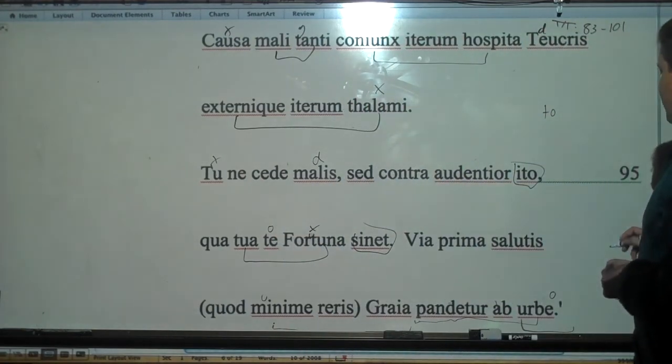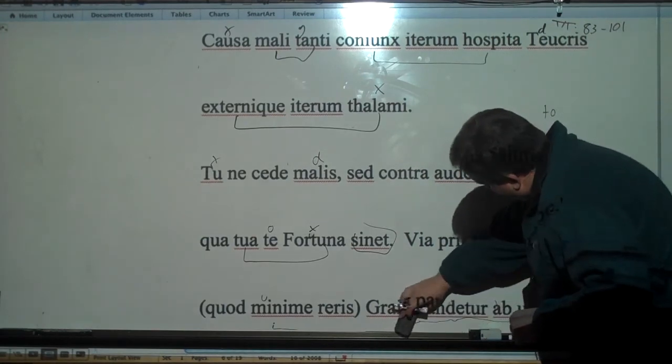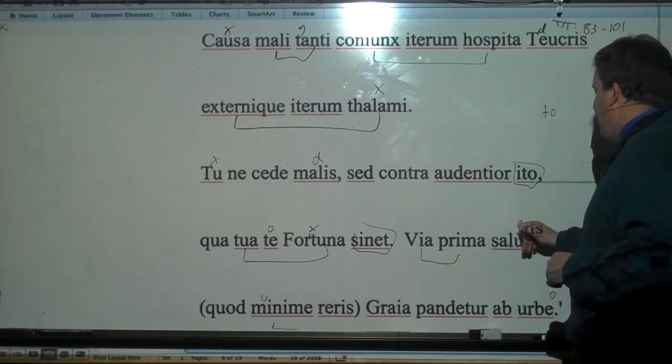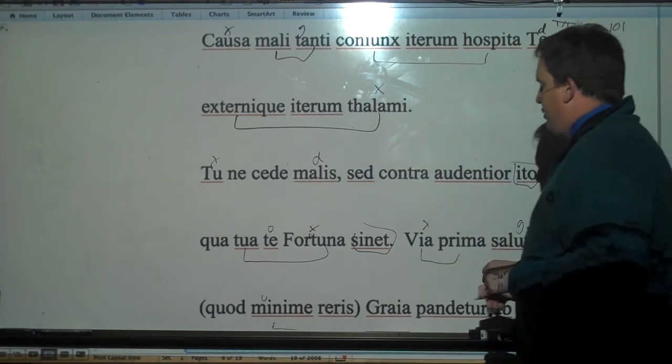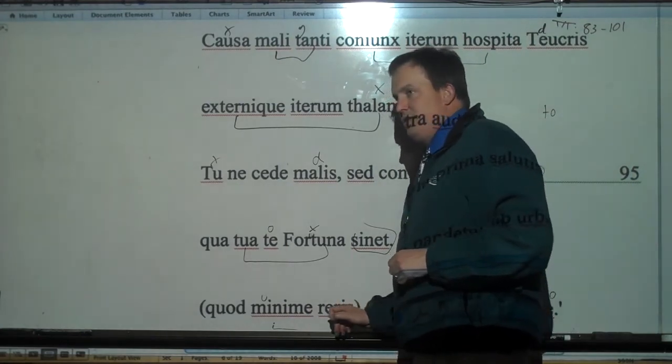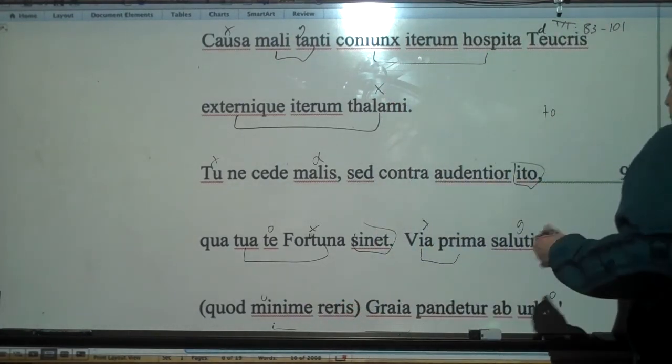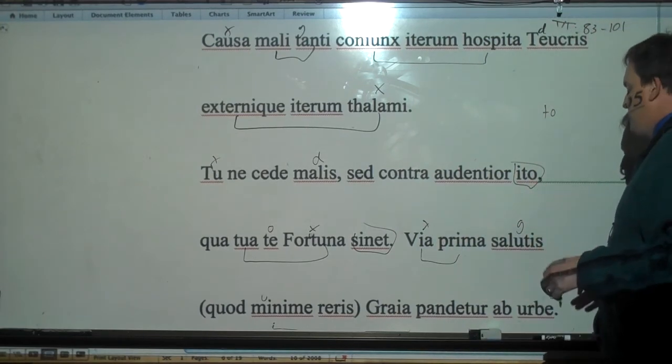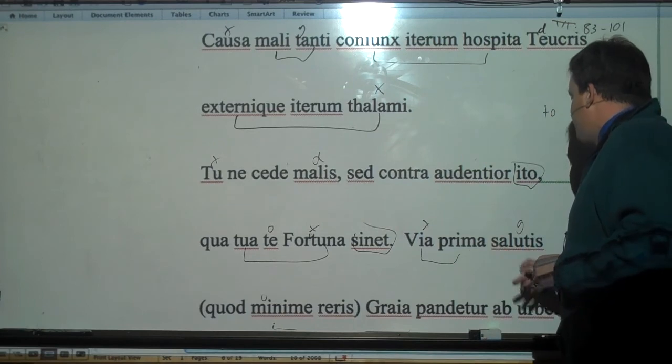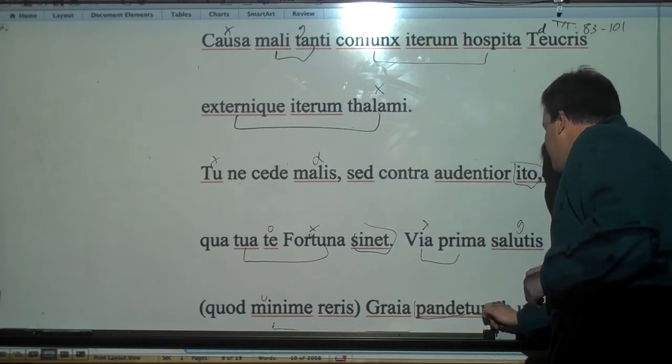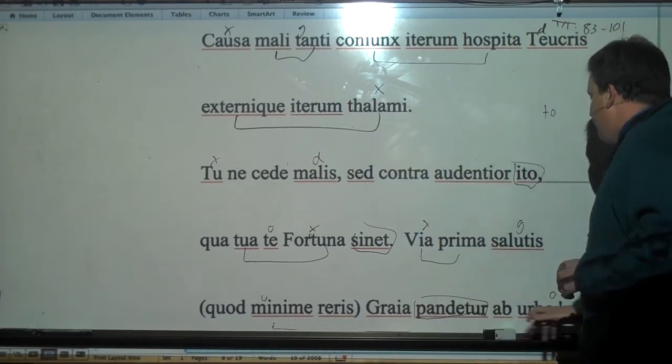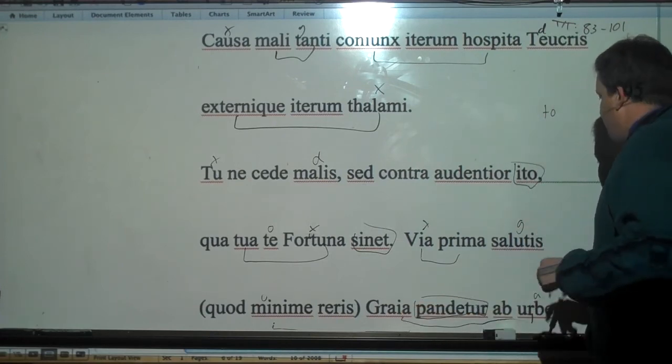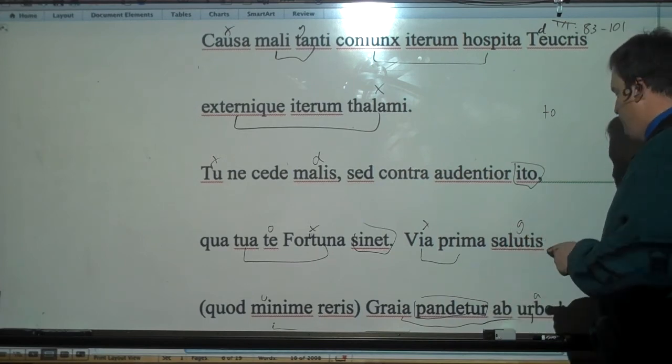And then this is the craziest part here that Aeneas probably when he hears this is just shaking his head. The first road of safety, which you would not think - quo minime reris - which you do not think, or think minimally. The first road of safety will be stretched or will be opened from a Greek city. So some Greeks living in Italy are going to be the first people who are going to help Aeneas, and we'll find out.